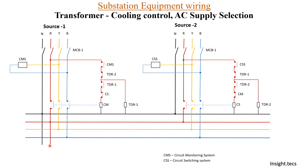As you can see, we are going to learn about the cooling control — when to turn on the fan and when to turn off the fan, or when to turn on the pump and when to turn off the pump. This is the diagram for AC supply selection. We are having two sources — source 1 and source 2. Let us understand this entire process: how these two sources are getting activated and how we are getting AC supply selection.